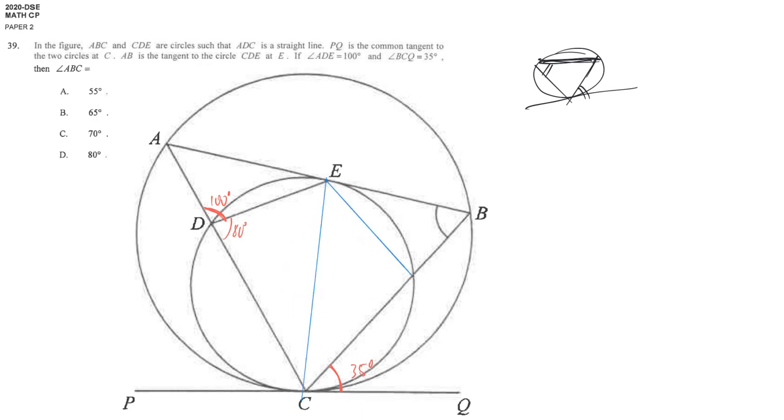Therefore, I create a triangle here so I can say that this is the angle in this segment. The angle in the major segment, the opposite angle, is 35 degrees.